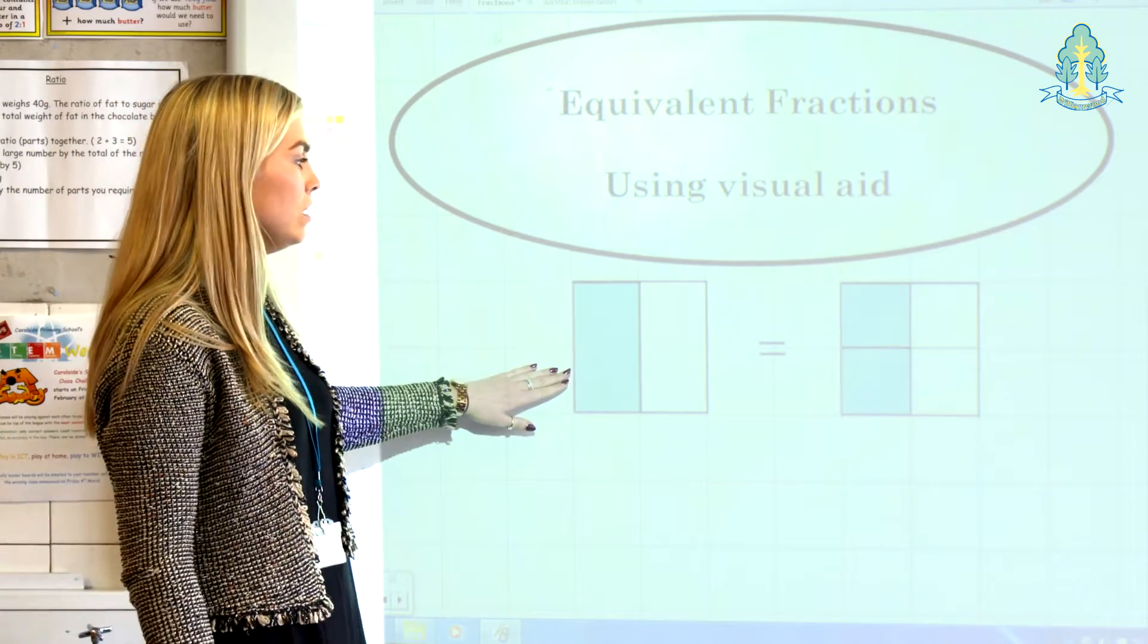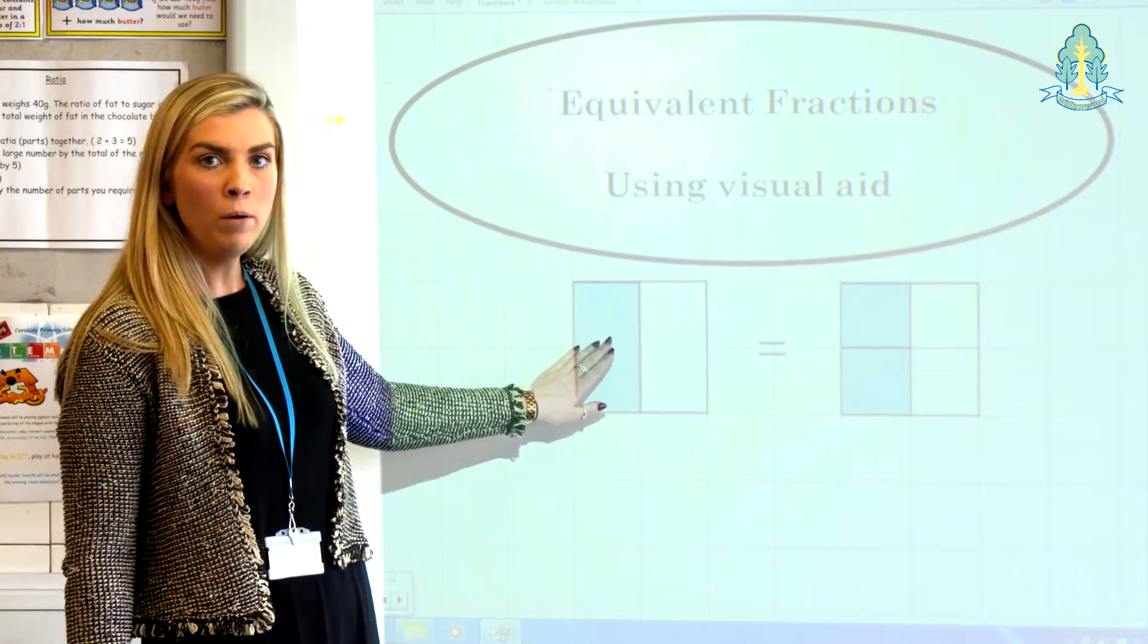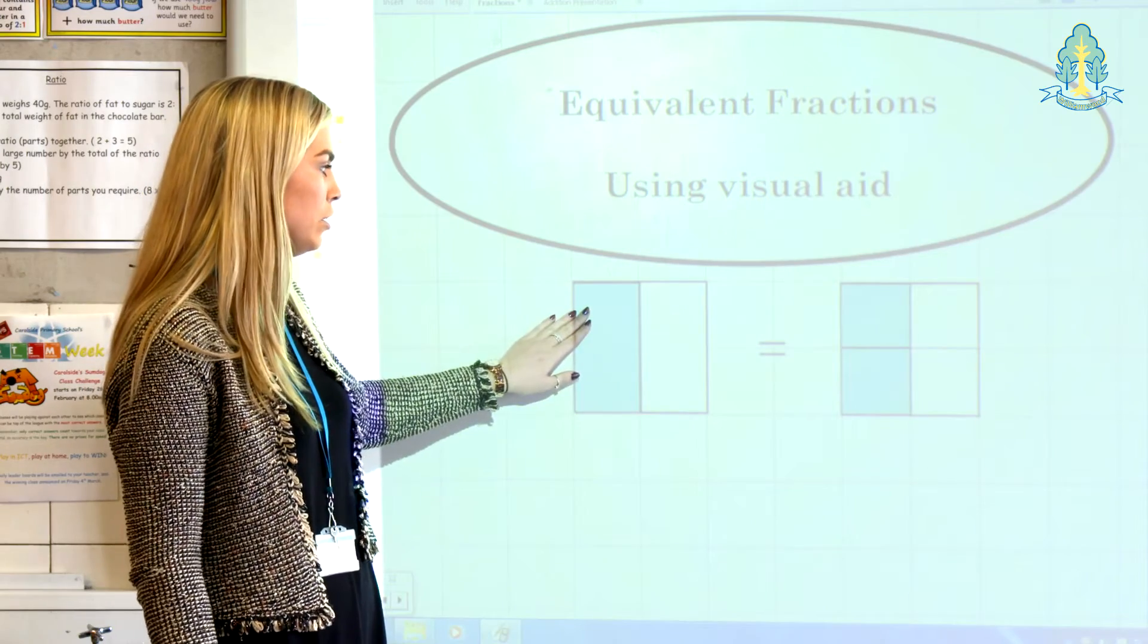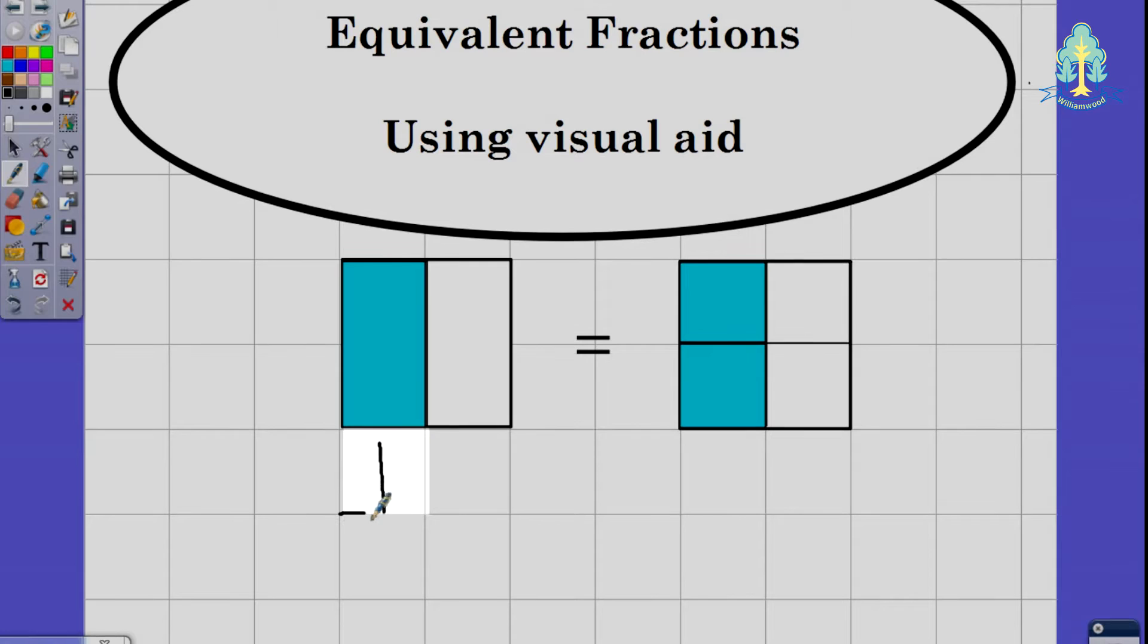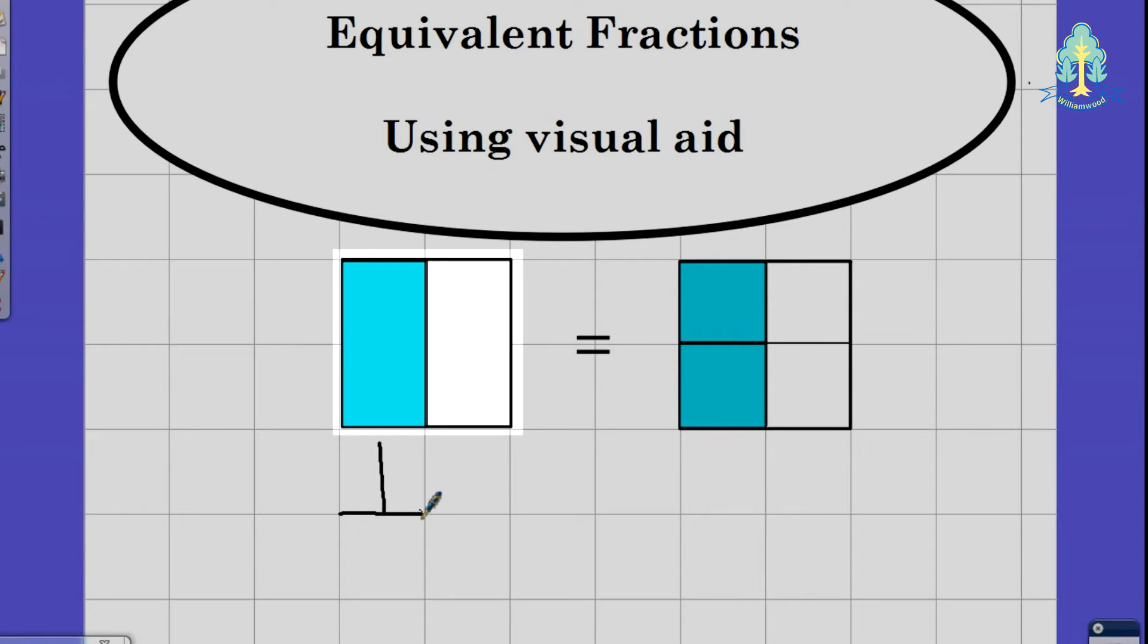Here we can clearly see that we have one part of our whole object shaded. So we have one part creating our numerator. We have two parts altogether so that creates our denominator. So the fraction that we have shaded here is one half.